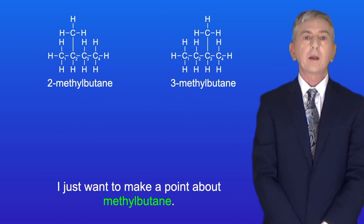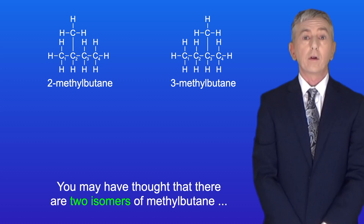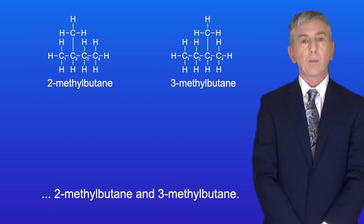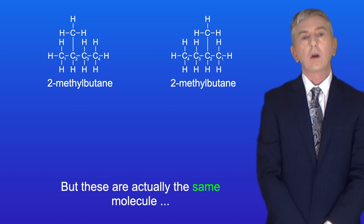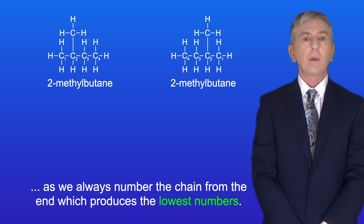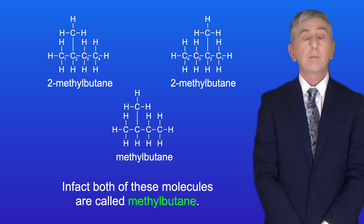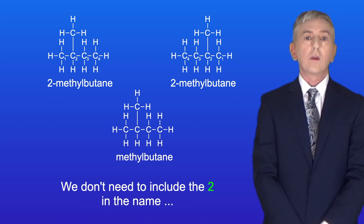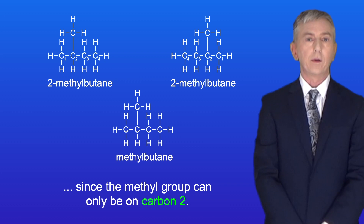Just a point about methylbutane: you may have thought there are two isomers — 2-methylbutane and 3-methylbutane — but these are actually the same molecule. We always number the chain from the end which produces the lowest numbers, so both are simply called methylbutane. We don't need to include the 2 in the name since the methyl group can only be on carbon 2.